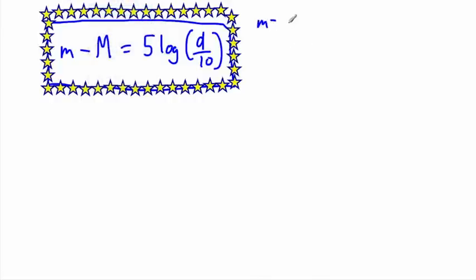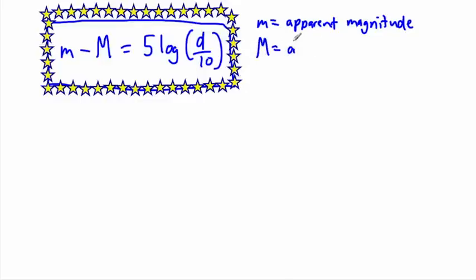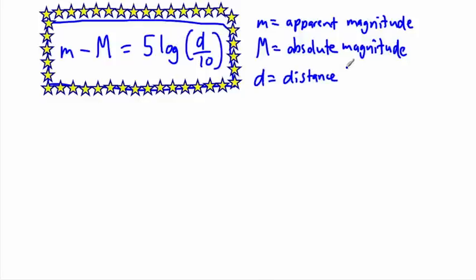To clarify the variables: little m is the apparent magnitude, capital M is the absolute magnitude — both have no units. Log is the base-10 logarithm, and D is the distance to the star measured in parsecs. It's important that the distance is in parsecs when using this equation. There are different versions of this equation, but they all do the same thing.